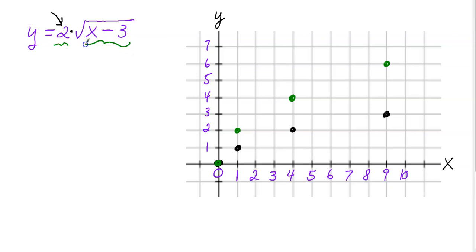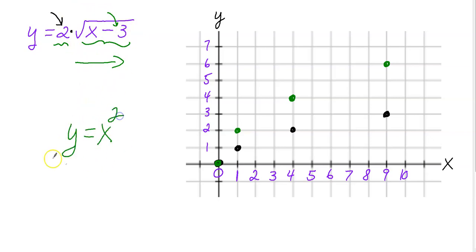Now let's look at the x minus three piece. You should clearly notice that the minus three is attached to the x and it's inside the square root, not outside. Since it's attached to the x, that tells you it's going to move horizontally. The minus three is actually gonna cause everything to move to the right three — you gotta think backwards. This moves everything to the right three units, just like before when we were dealing with y equals x squared. So the minus three inside the square root causes everything to move right three, not left three.